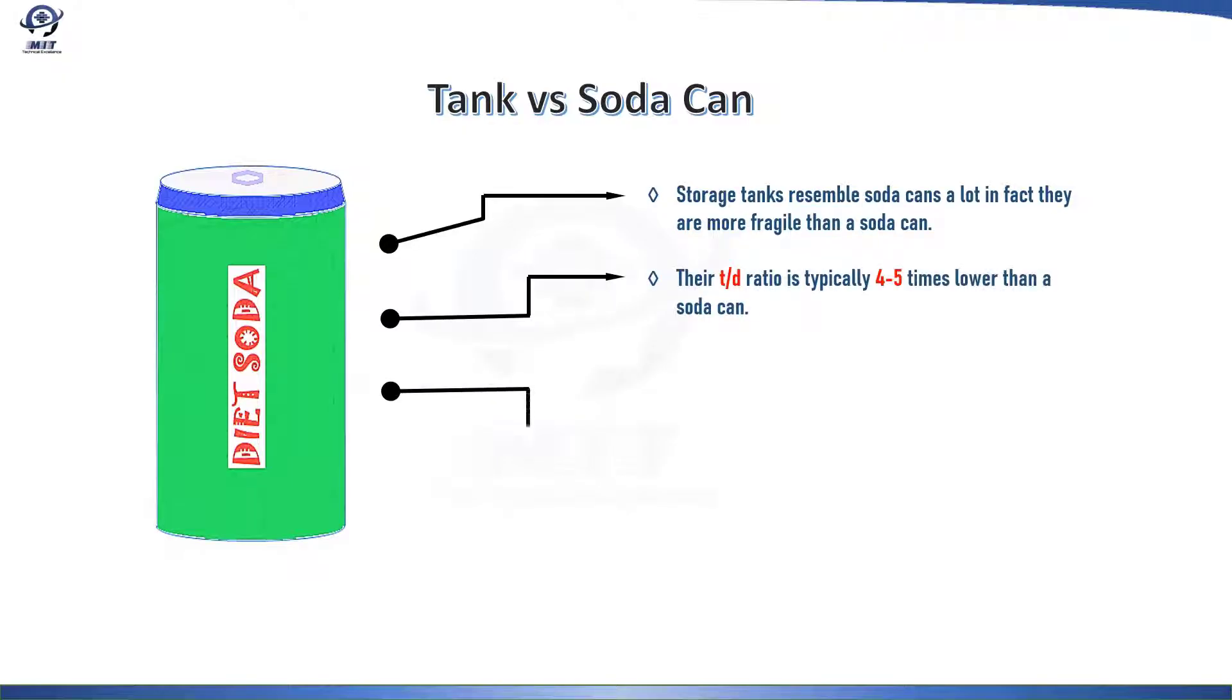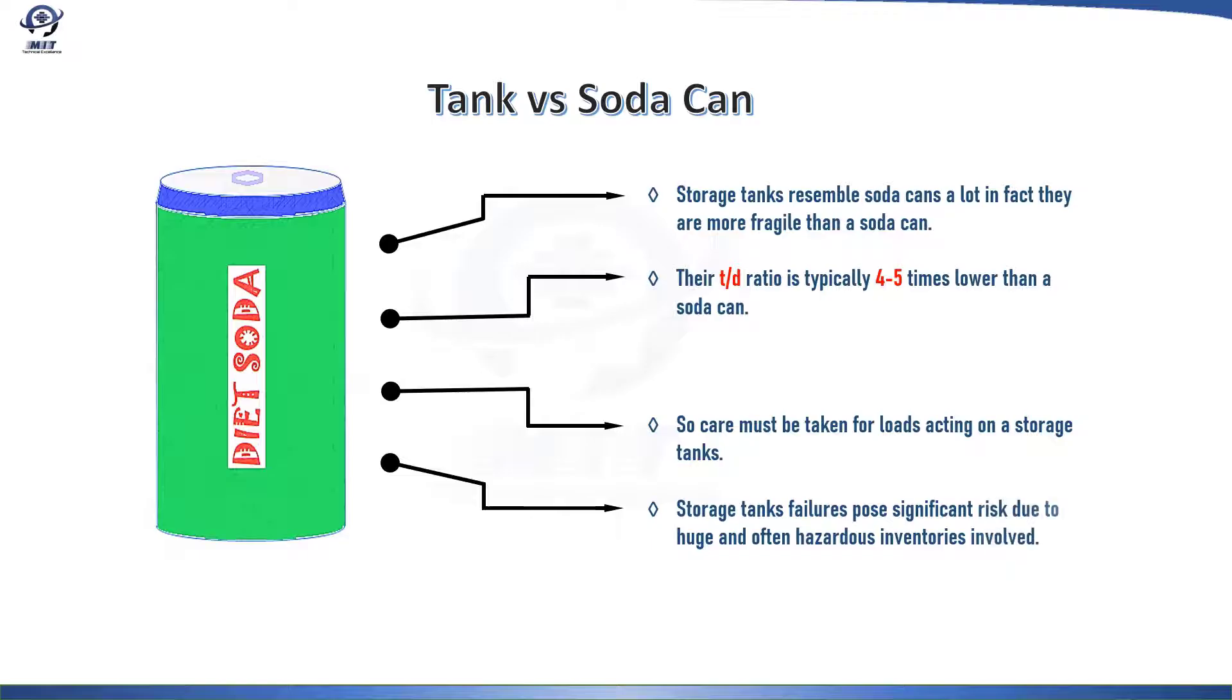Storage tanks are often compared to tin cans mainly due to their thickness by diameter ratio. In fact, a storage tank is more fragile than a soda can. Compare their t by d ratios. The soda can t by d ratio is typically four to five times that of storage tanks. So care must be taken for loads acting on a storage tank as these tank failures can pose significant risk due to the large quantities of often hazardous fluids stored inside.